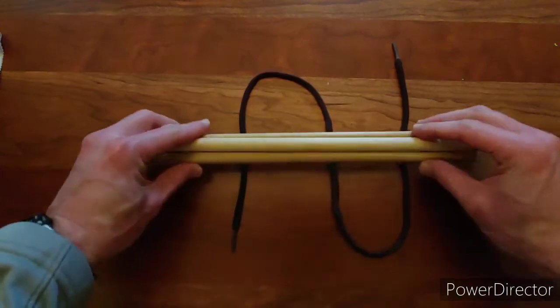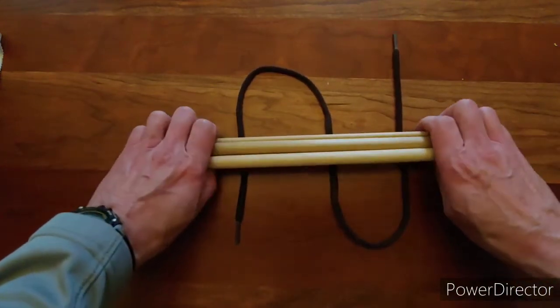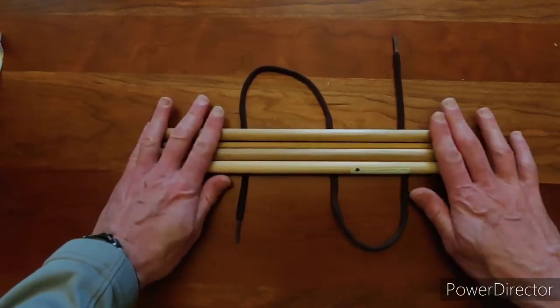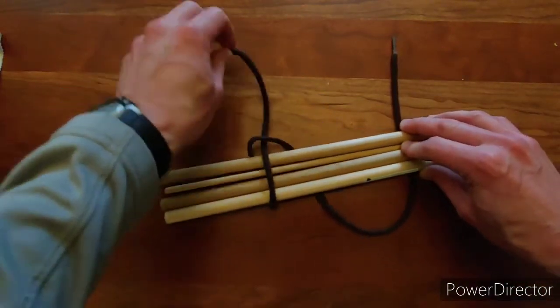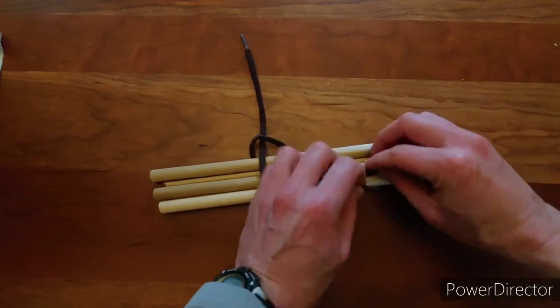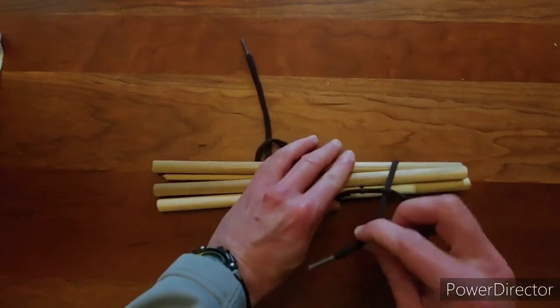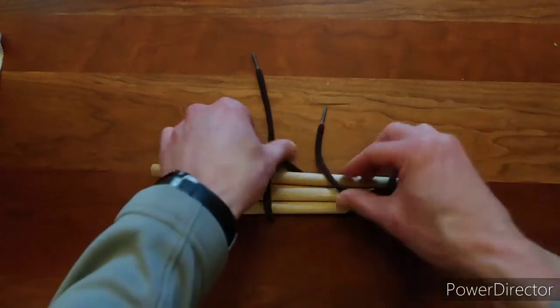For those of you who need a little review on the pole hitch, you're going to make an S, N, or Z type shape and lay whatever it is you have over top.